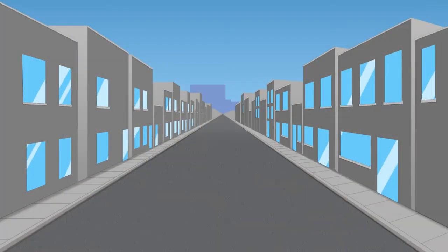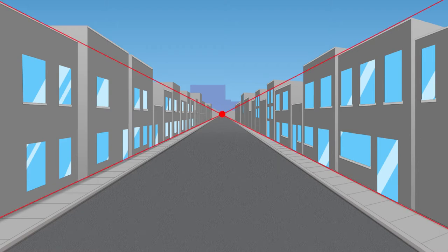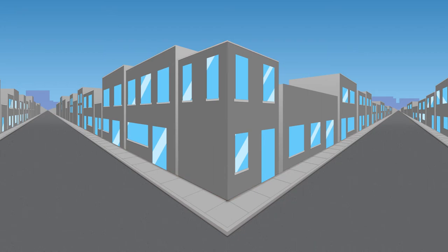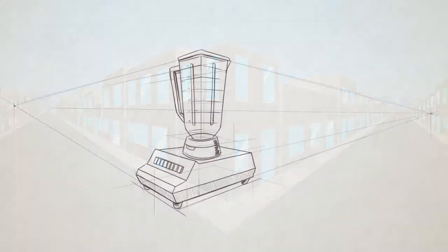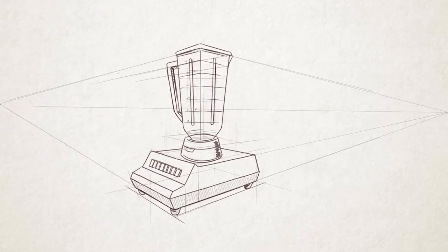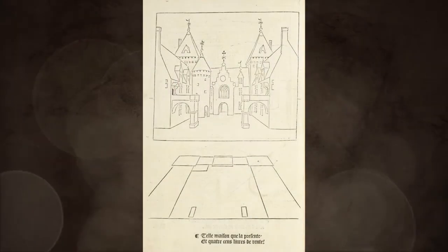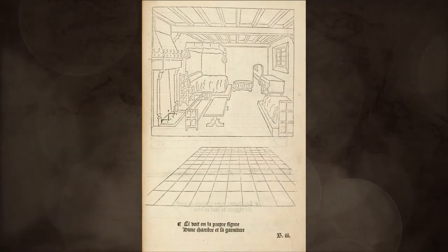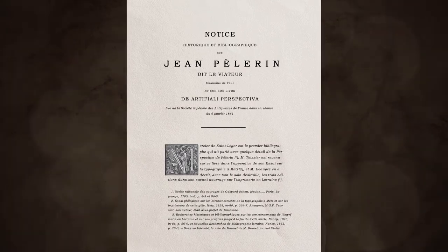Going back to the idea of linear perspective, using a single vanishing point is called one-point perspective. If we add another vanishing point to a drawing, this will give us two-point perspective, which is best illustrated by looking at the corner of a building. Both sides of the building have a separate vanishing point. This technique is useful in showing a realistic view of an object from an angle. Two-point perspective is thought to have started with John Pellerin, who wrote the first illustrated book on perspective in 1505.